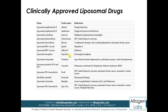Another agent is a liposomal IRIV vaccine available in the market by trade name Epaxal, used against hepatitis A. Another is a liposomal IRIV vaccine called Inflexal V, used against influenza. Liposomal morphine is another clinically approved agent. Liposomal verteporfin and liposomal morphine are also used against post-surgical analgesia. Liposomal verteporfin is used against age-related macular degeneration, pathologic myopia, and ocular histoplasmosis. These are the different liposomal drugs which are clinically approved and used for a variety of purposes.